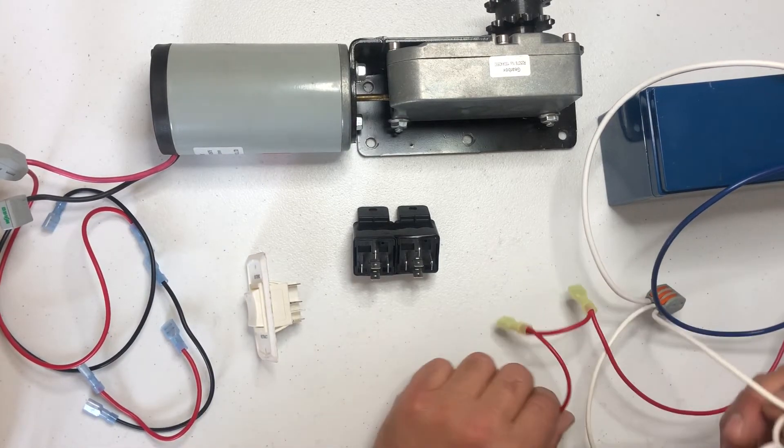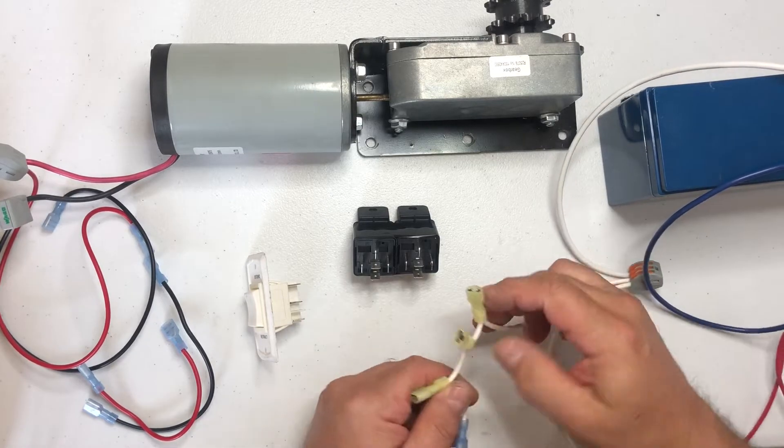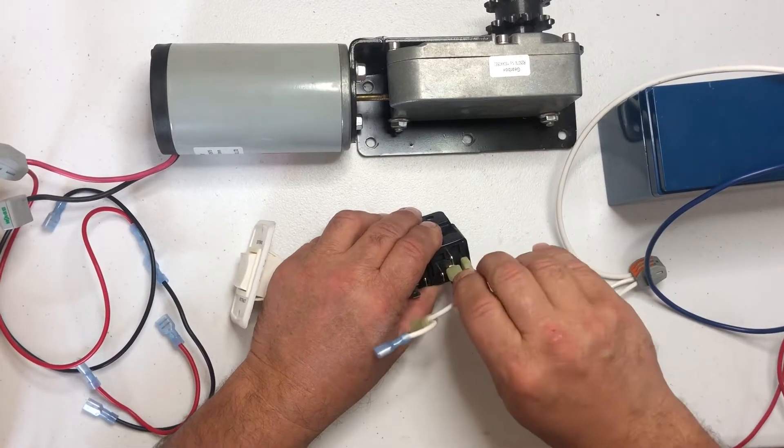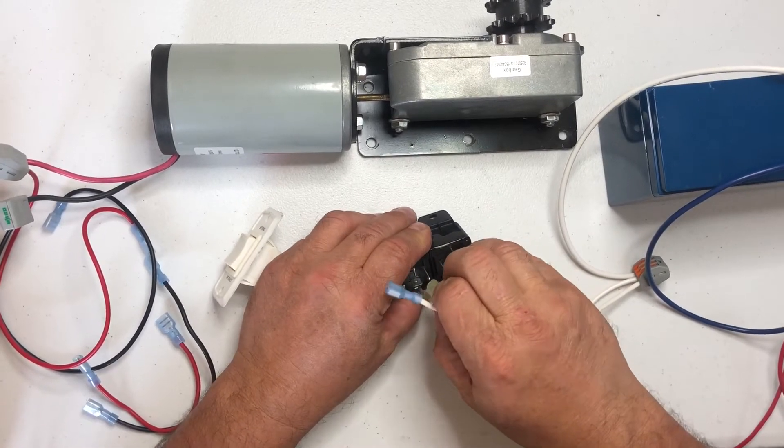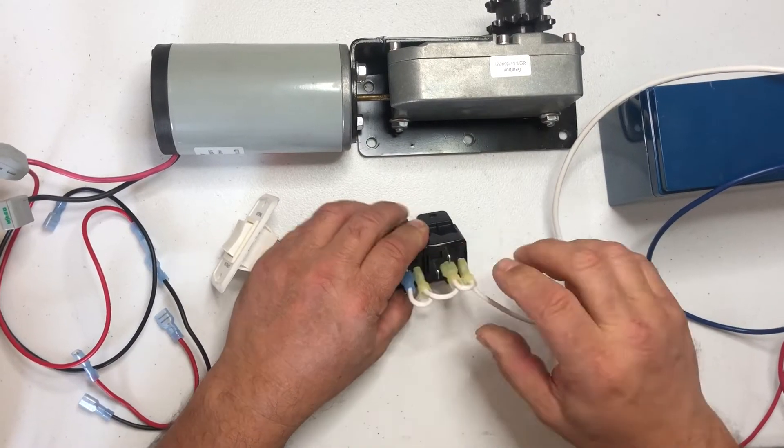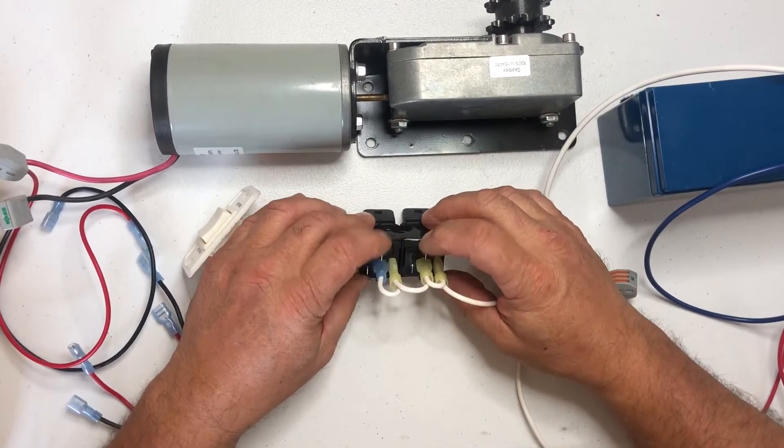So the way they had it wired was you're gonna put a negative on a coil, negative on the center post, negative on a coil, negative on a center post. Okay, so that's gonna put two negatives right here.